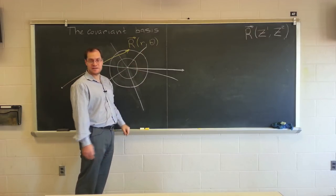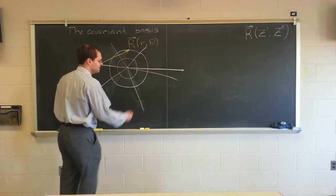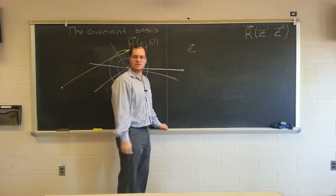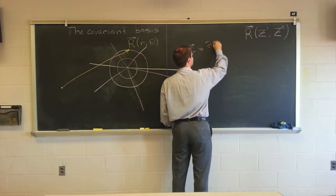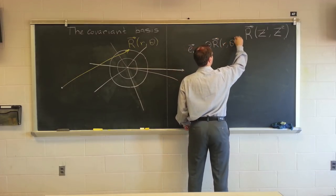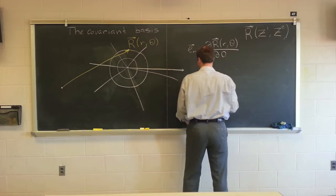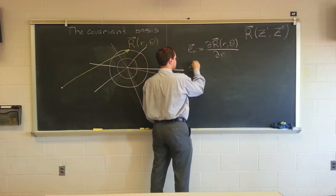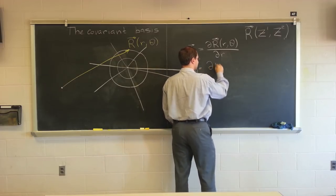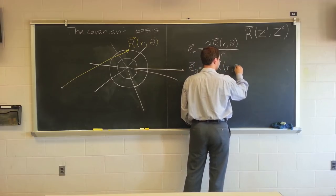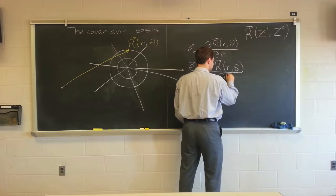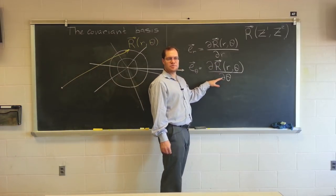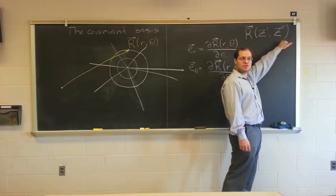That's your coordinate basis. It will be denoted by e sub r. E sub r is the coordinate vector associated with r, defined as the partial derivative of r (as a function of r and theta) with respect to r. And e sub theta is defined as the partial derivative of r (as a function of r and theta) with respect to theta. These are very nice definitions because they're intrinsic to the coordinate system. For any coordinate system, you could evaluate these derivatives — dr/dz1 and dr/dz2 — and you have a pair of vectors.